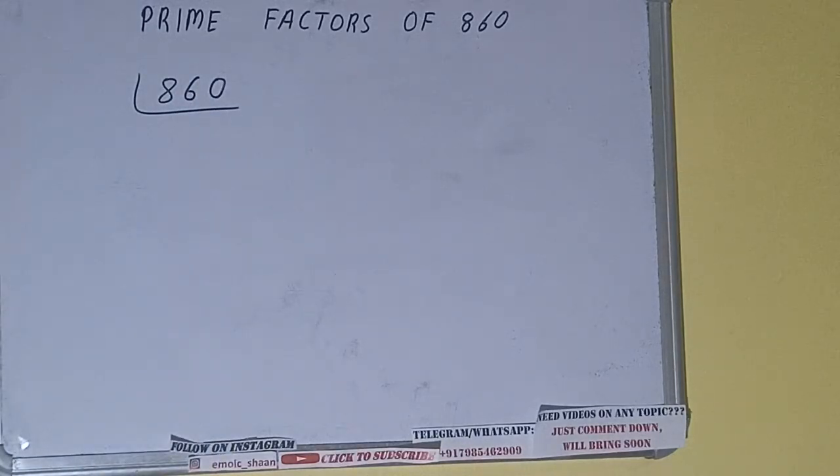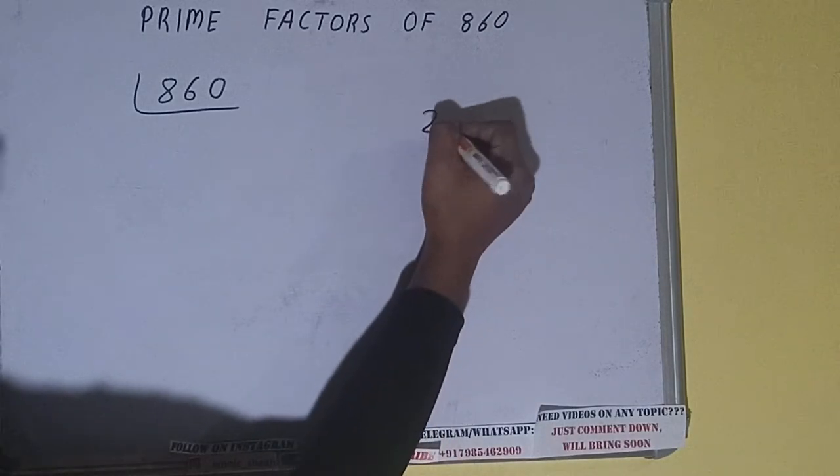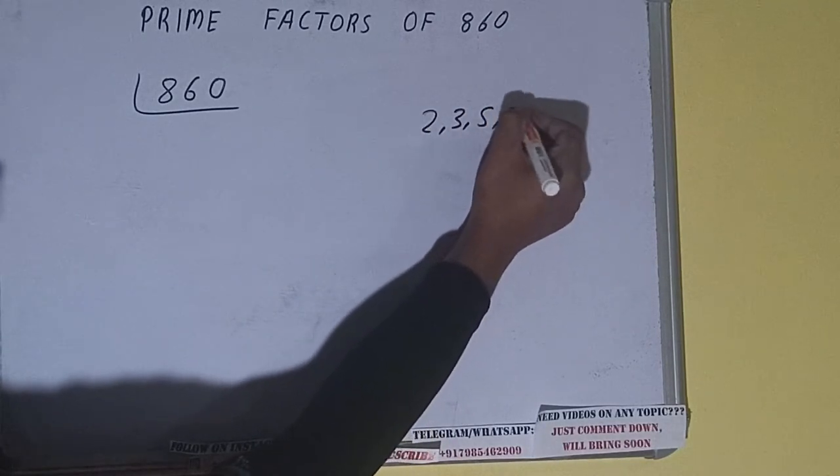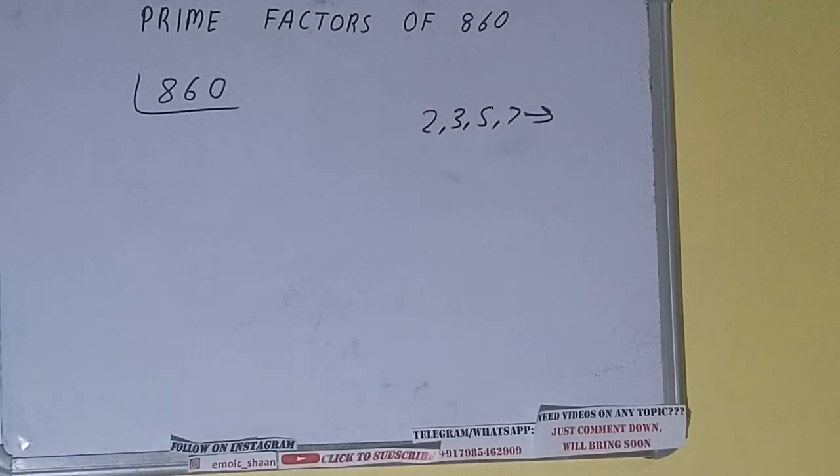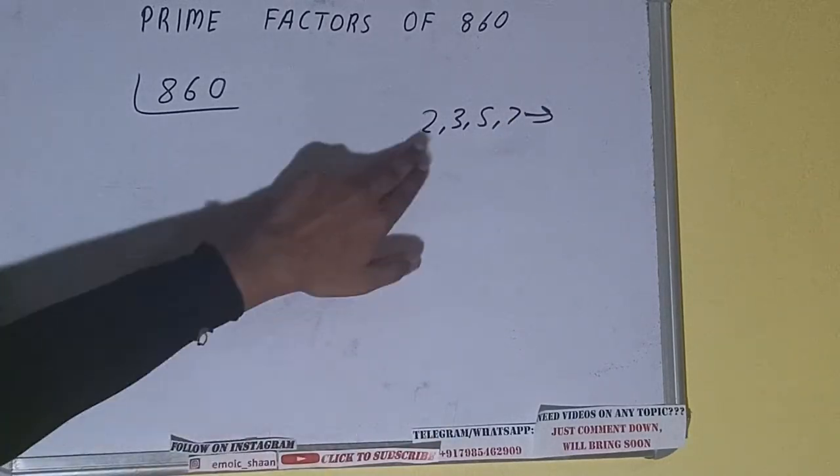...is what are prime numbers. Prime numbers are numbers that are divisible by 1 and the number itself, like 2, 3, 5, 7, and so on. We'll check with the lowest prime number we have, that is...